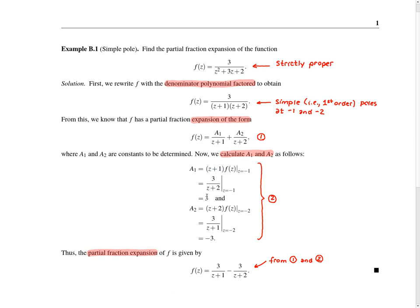To compute a1, we take the function f and multiply it by the factor associated with the pole whose coefficient we're computing — in other words, the factor (z+1) — and then evaluate at z equal to minus 1 to force that factor to zero. If we evaluate this, we get 3. Then for a2, we take f, multiply it by the factor (z+2), and evaluate at z equal to minus 2, giving us minus 3. Taking these values and substituting them into the partial fraction expansion gives us our final answer.